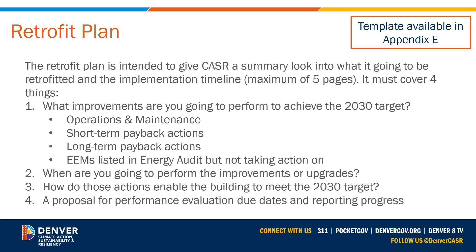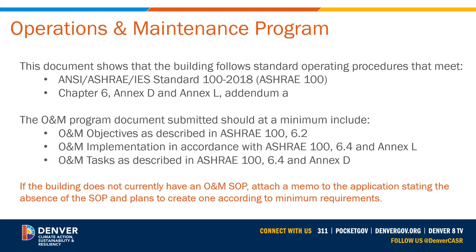Second, the timing of the planned improvements and upgrades. Third, how the improvements enable the building to meet the 2030 target. Lastly, the plan should propose dates for progress reporting and performance evaluation. As building owners work through their compliance plans, the city wants to make sure they are considering what changes they may have to make to their operations and maintenance plans.